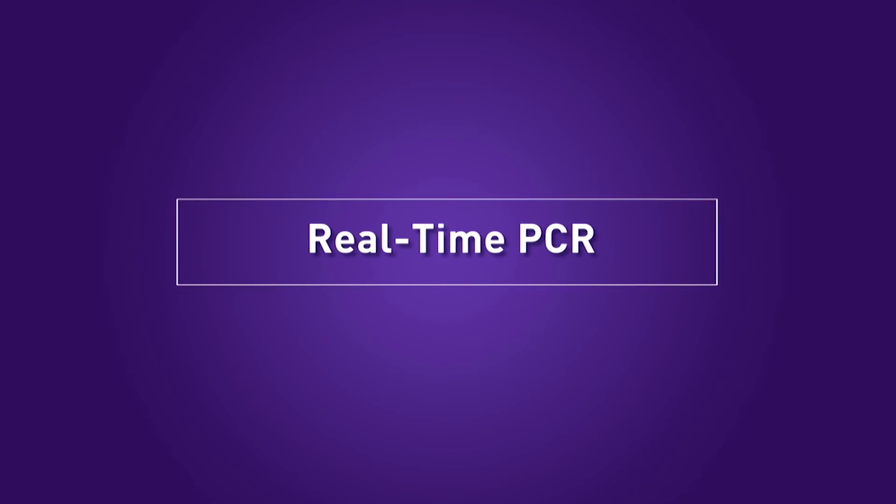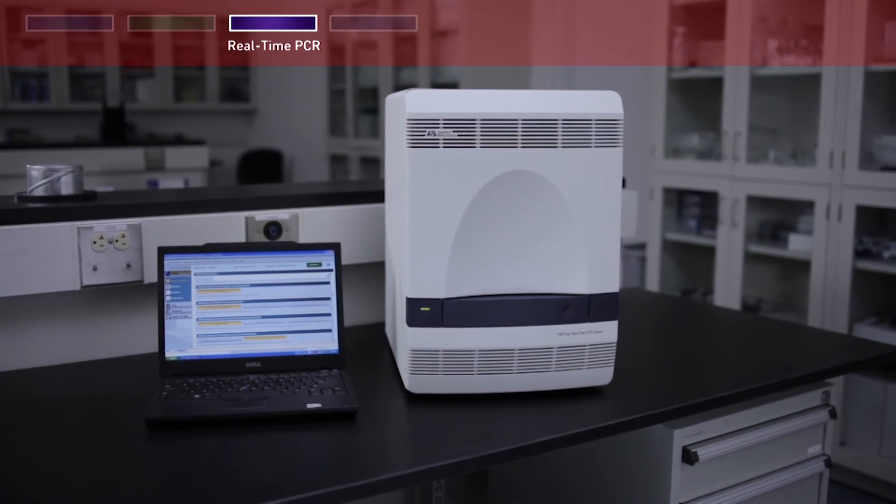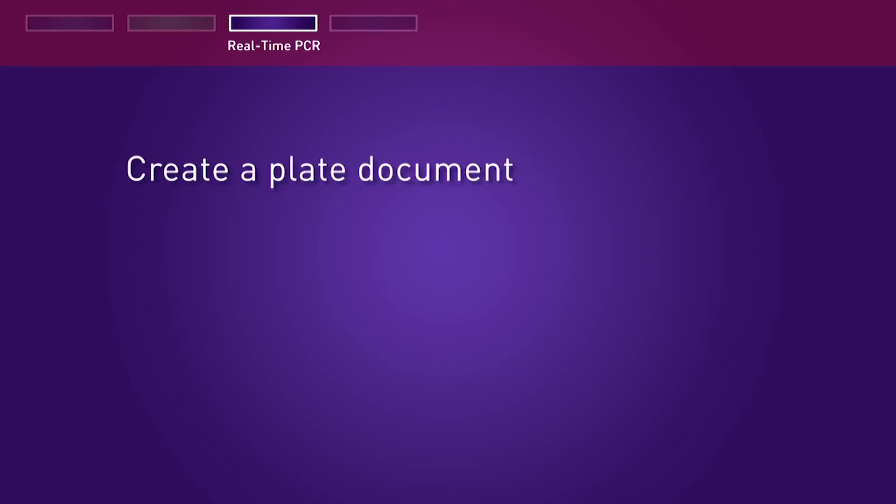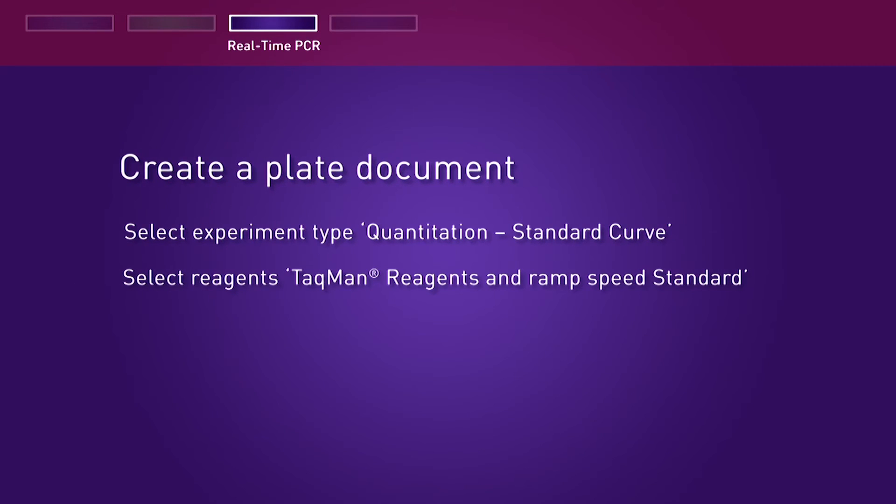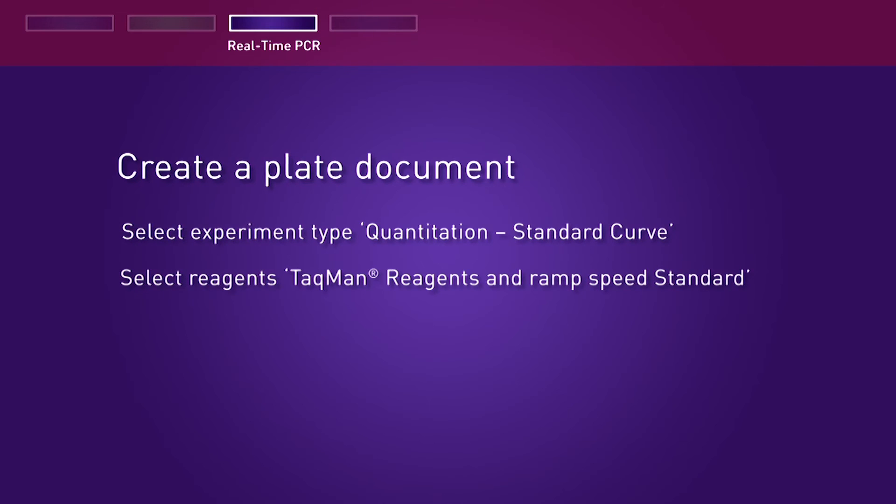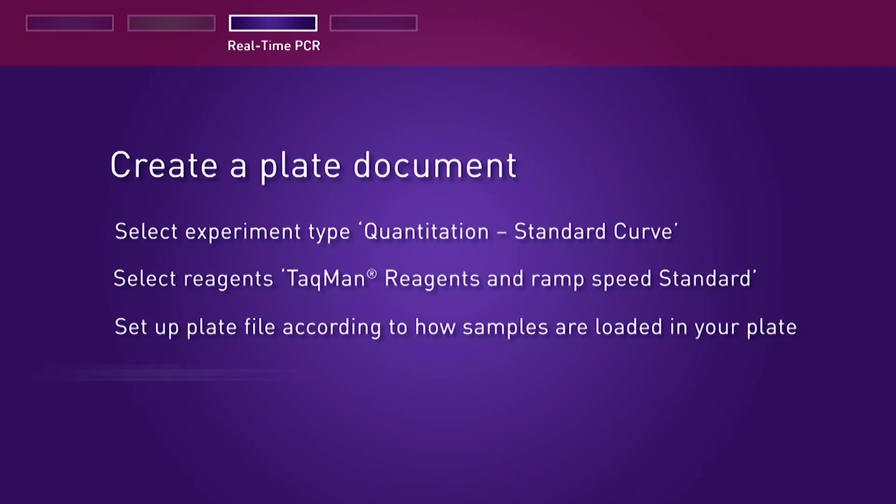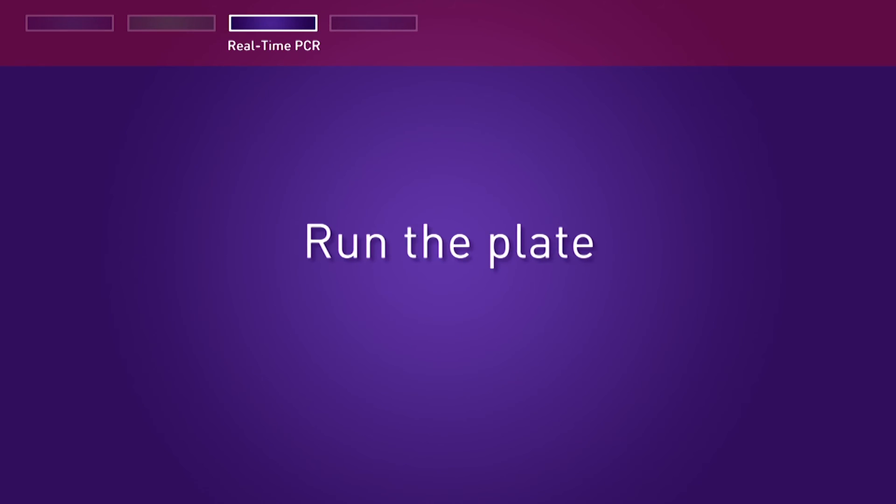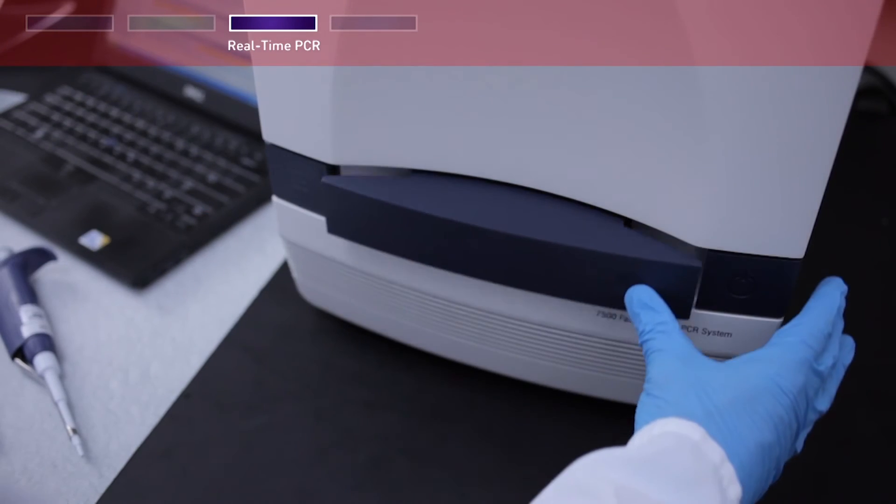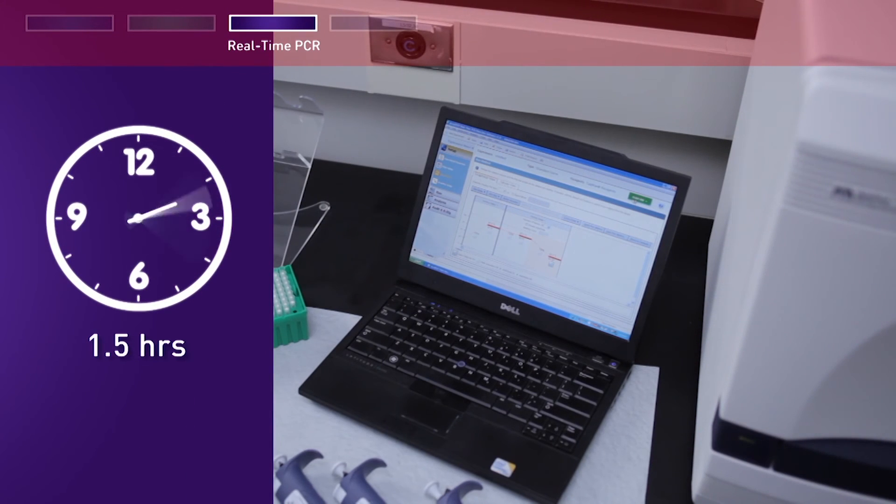Real-time PCR is performed in the Applied Biosystems 7500 Fast real-time PCR system. To begin the run, select Experiment Type: Quantitation Standard Curve. Select Reagents: TaqMan Reagents and Ramp Speed: Standard. Set up plate file according to how samples are loaded in your plate. Set the reaction volume per well to 30 microliters. Load the plate into the instrument and click Start Run. A residual DNA run is approximately 1.5 hours.